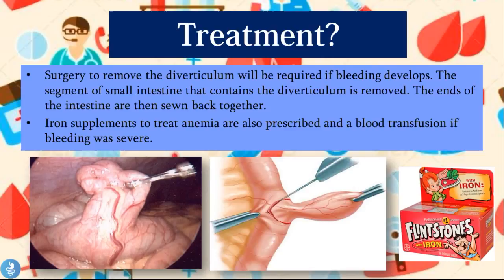Treatment requires surgery to remove the diverticulum if bleeding develops. The segment of small intestine containing the diverticulum is removed and the ends are sewn back together. As seen in the surgical image, the diverticulum is resected and the two parts of the small intestine are pulled together and stitched back. Iron supplements are also prescribed to treat anemia, and a blood transfusion will be necessary if bleeding was severe.